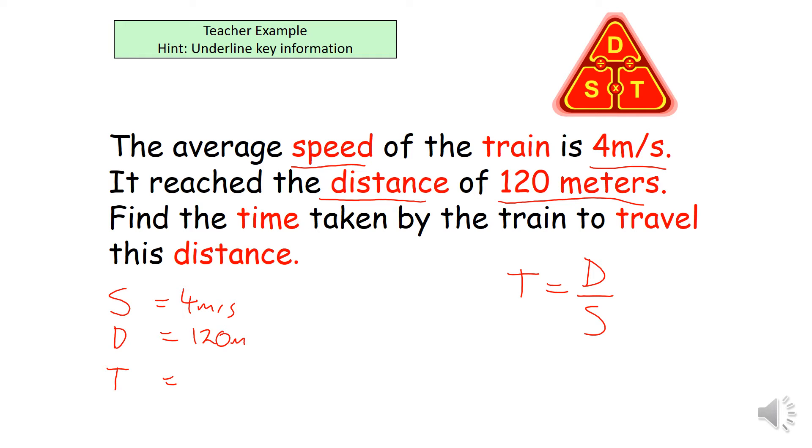Now, don't forget our speed is in meters per second. So the distance should be in meters and the time should be in seconds. So putting all our values into our formula, where the distance is 120 and the speed is 4, we get 120 divided by 4 equals 30. And that's 30 seconds.